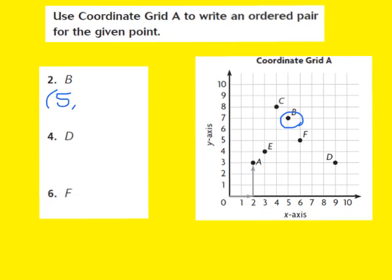My next step is to move up the y-axis to locate where B is. So here's 1, 2, 3, 4, 5, 6, 7. I stop at 7 because B is located at 7 on the y-axis. So I write down 7 as my y-coordinate. Point B is located at 5 on the x and 7 on the y, so the ordered pair is 5, 7.